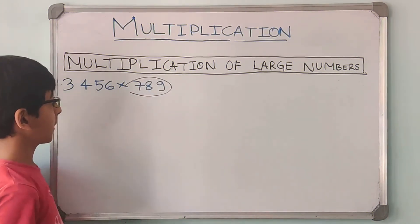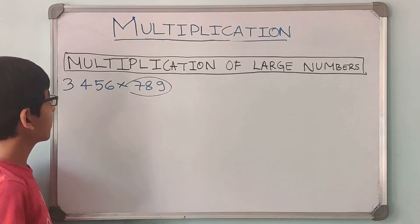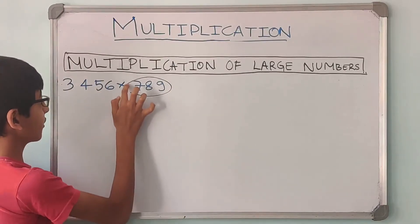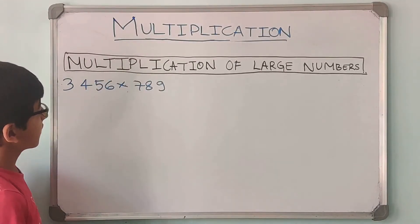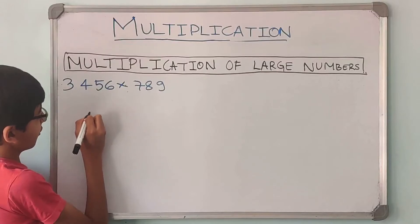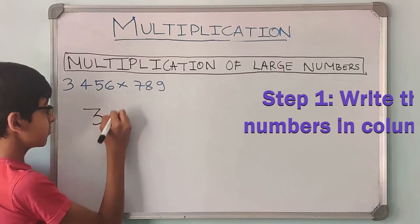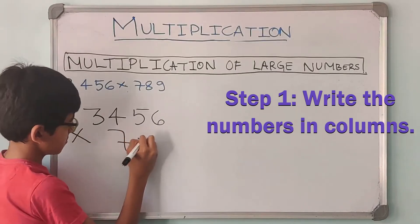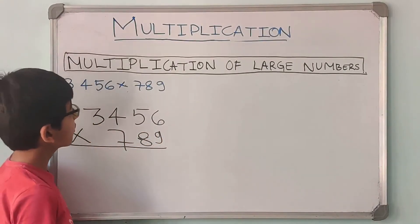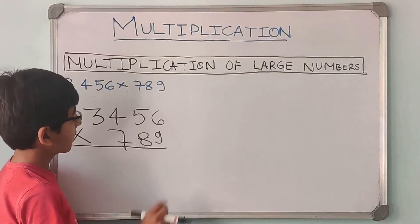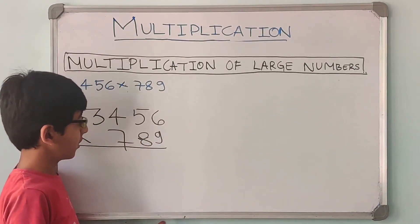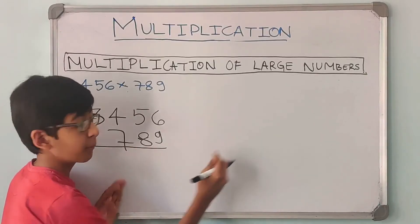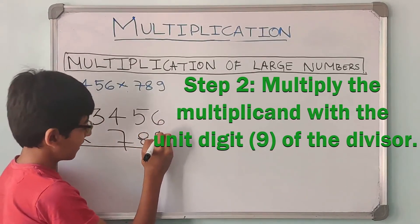Now let us solve a question which has a 3 digit multiplier. So our question is 3,456 multiplied by 789. So our first step is to write them in columns.